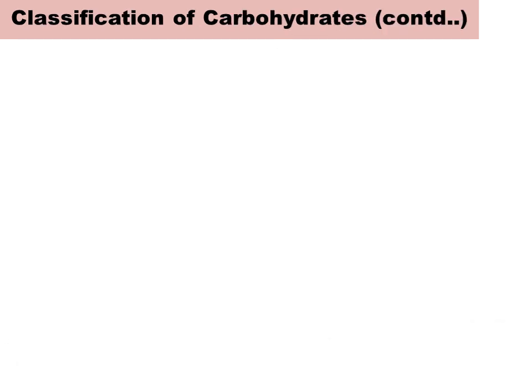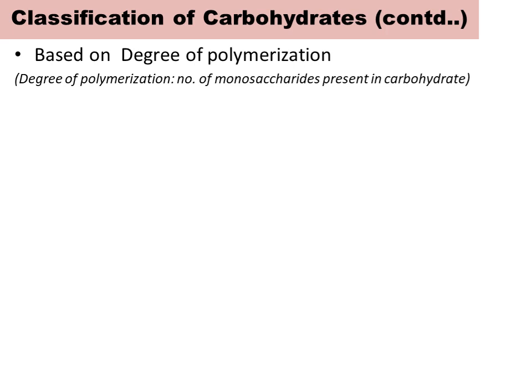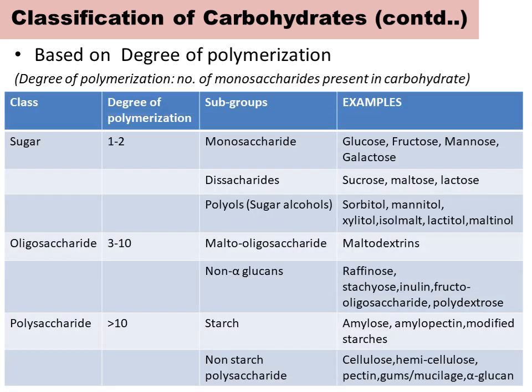In 1997, the WHO classified carbohydrates based on molecular size, which is determined by the number of monosaccharides present in a carbohydrate, the type of linkage, and the character of individual monosaccharide. In this classification, carbohydrates have been divided into three main groups, which was revised in 2007.